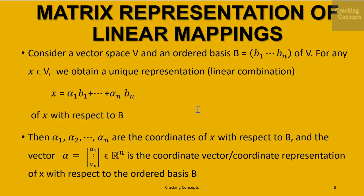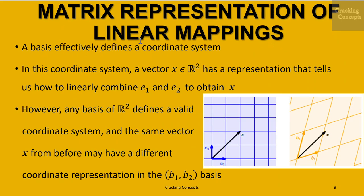Now we look into the matrix representation of linear mappings. Consider a vector space V and an ordered basis B given by vectors b1 to bn of V. For any vector x belonging to V, we obtain a unique representation as a linear combination x equals alpha1 times b1 plus ... plus alpha_n times bn with respect to B. The values alpha1, alpha2, ..., alpha_n are the coordinates of x with respect to B, and the vector (alpha1, ..., alpha_n) is the coordinate vector of x with respect to ordered basis B.